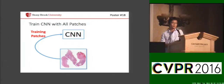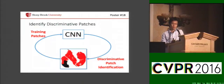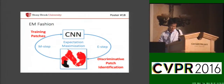This is our pipeline. We first train a CNN using all patches for several epochs. Then, using the partially trained CNN, we identify discriminative patches robustly. After this, we train the CNN using discriminative patches only. This is done in an EM fashion, and after several EM iterations you will have a converged patch CNN.